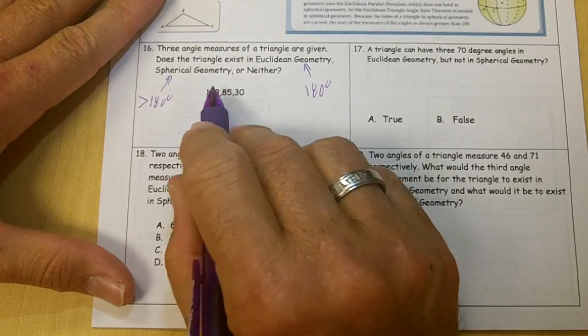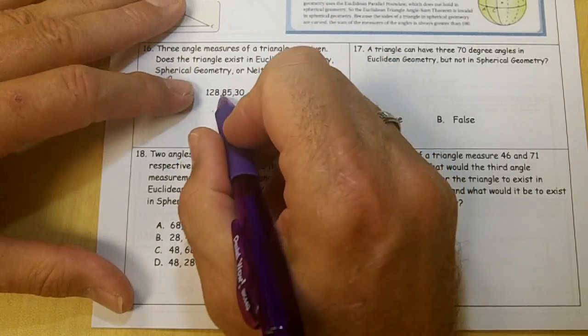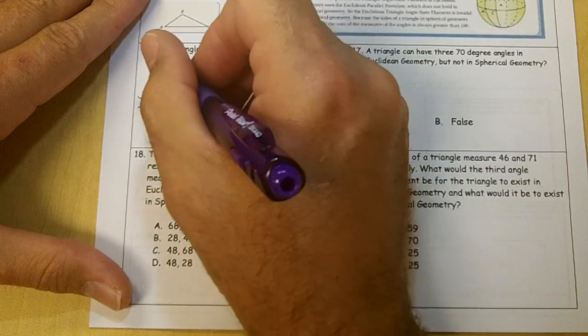Okay, so if you add up these, you get 115 plus this is going to be 243. That's more than 180, so it's spherical.